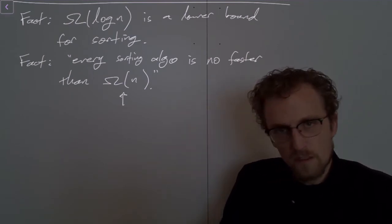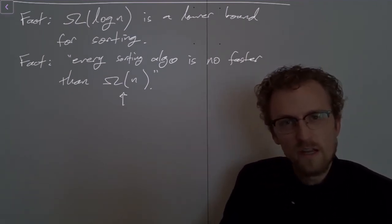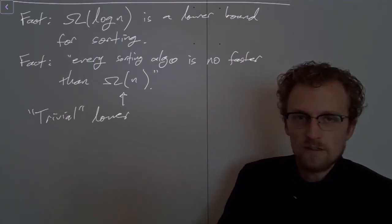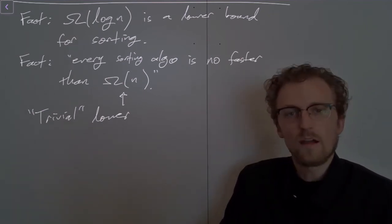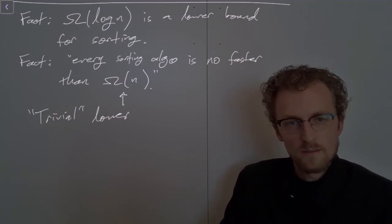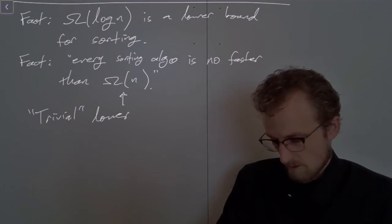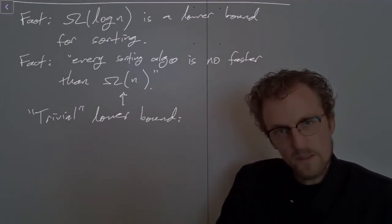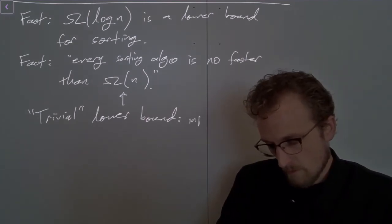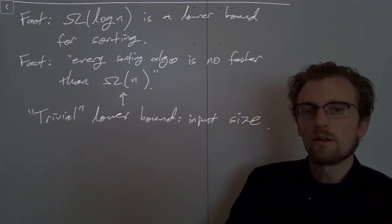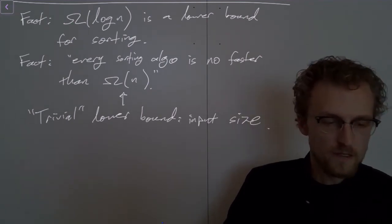This is what's called a trivial lower bound, and the interesting one is the linear one. A trivial lower bound is usually established just by looking at the size of the input. If we have an algorithm that is forced by the nature of the problem to look at every element of the input, then the trivial lower bound is just the size of the input. Sorting certainly falls into this category, because you clearly need to look at every element of the input.